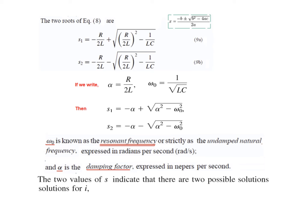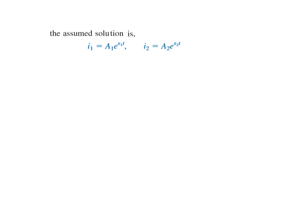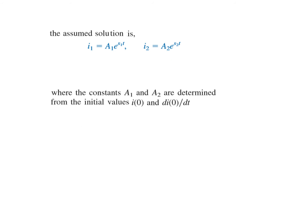The two values of S indicate there are two possible solutions for the current i. We assume the two solutions are i₁ = A₁·e^(S₁t) and i₂ = A₂·e^(S₂t). The total current is their sum, i(t) = i₁ + i₂. To find the exact answer, we need to determine A₁ and A₂ from the initial values I₀ and dI₀/dt.